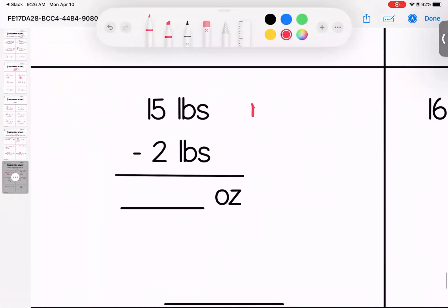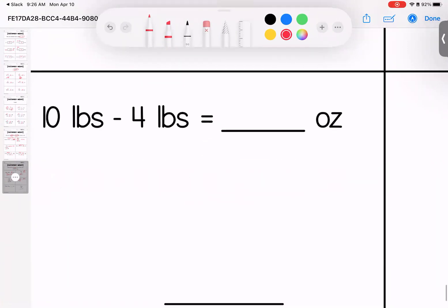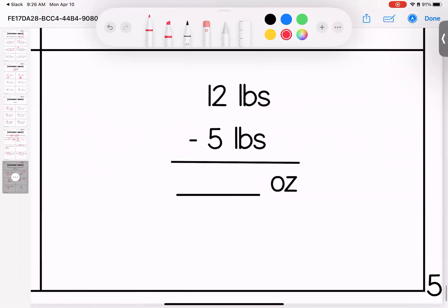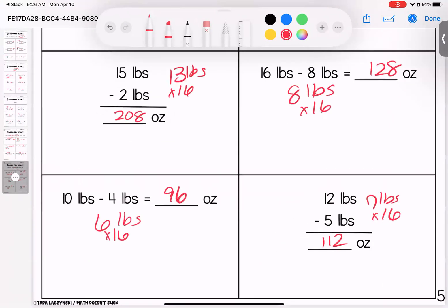15 pounds minus two is 13 pounds. I know this was a big ask of you. 208 ounces. 10 minus four is six. And when I multiply that by 16, I get 96 ounces. Last one over here, 12 minus five leaves me with seven pounds. And when I multiply that by 16, I'm left with 112 ounces. Any questions, sweet faces, please bring them with you to class. Have a good weekend.